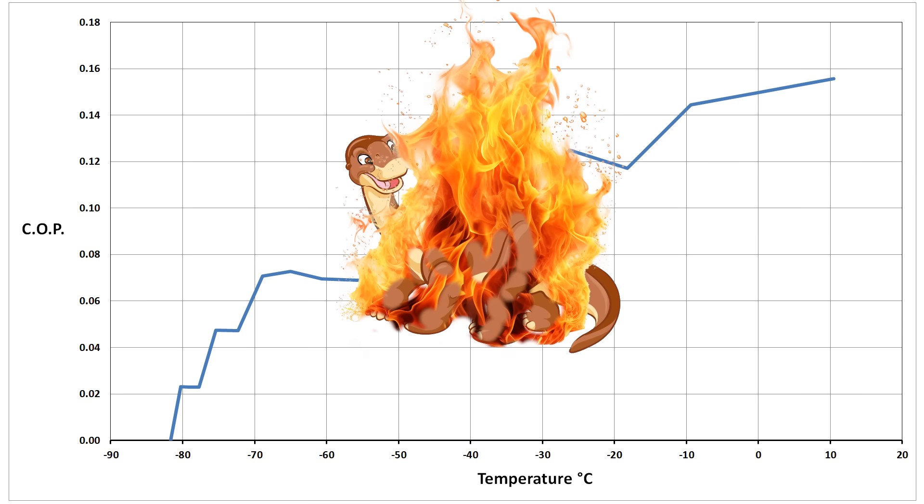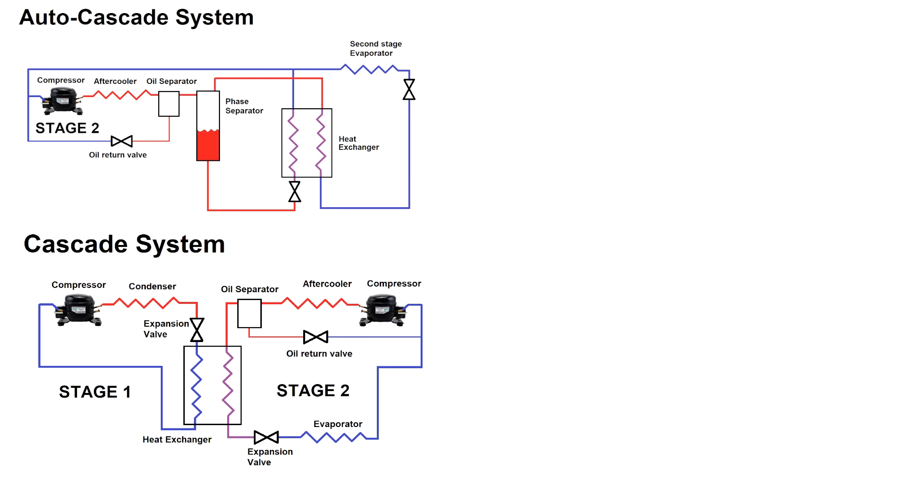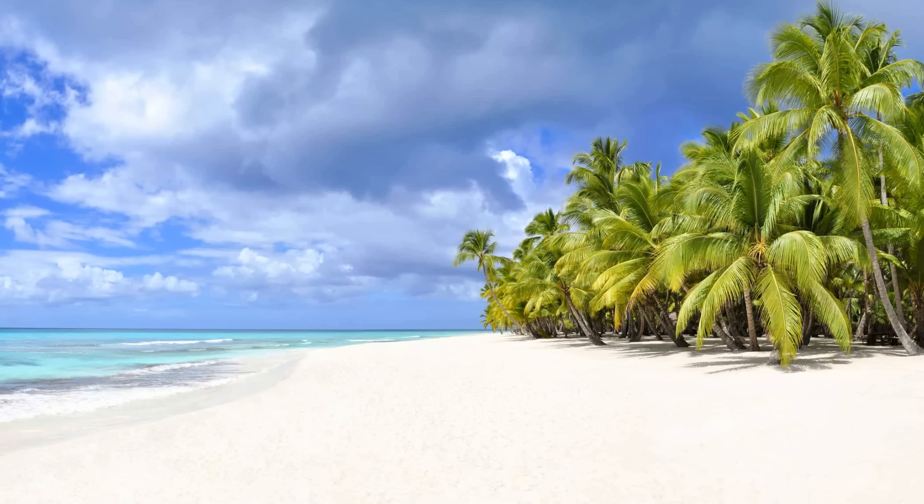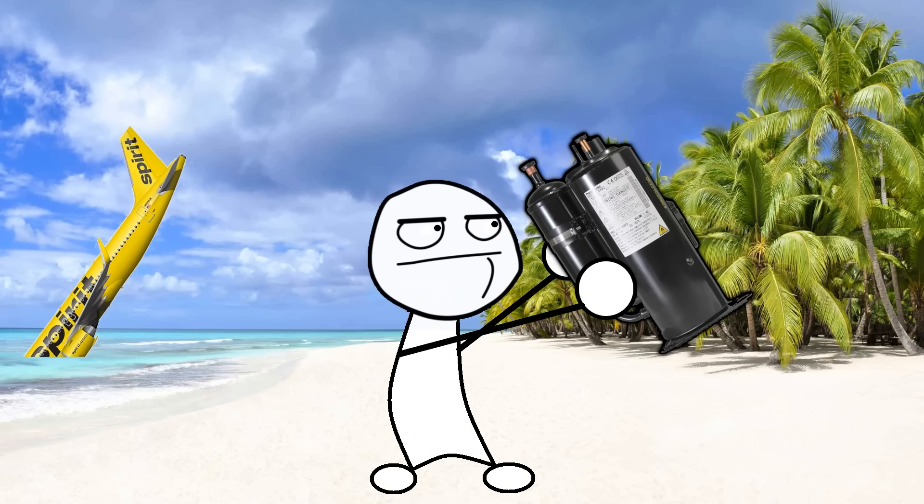So what did we learn? Regular cascade systems are better than autocascade systems, and unless you're stranded on a desert island with only one compressor, it's worth the slight additional complexity to build a cascade system with two compressors.